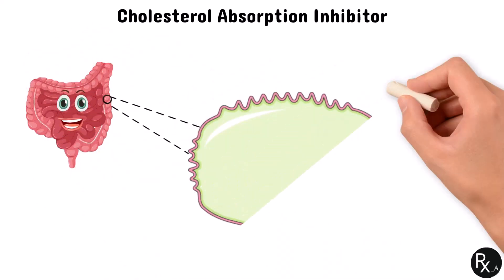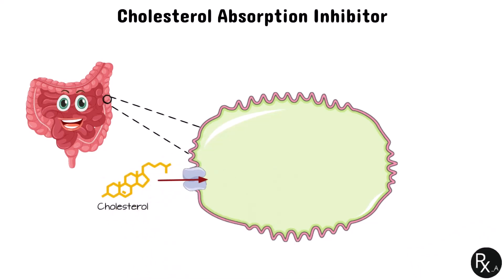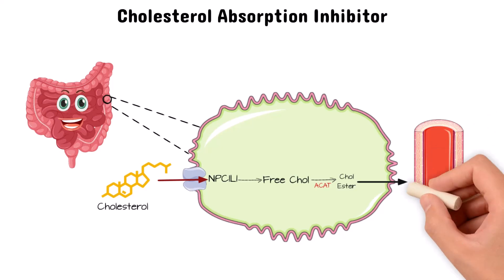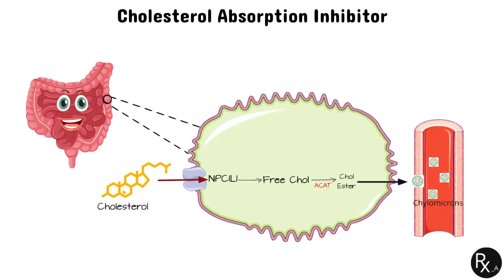Let's now discuss cholesterol absorption inhibitors, another class of medications that lower cholesterol. Free cholesterol coming from food or bile sources first attaches to the protein NPC1-L1, which is found in the plasma membrane of enterocytes — the cells that line the walls of the intestines. Following binding, endocytosis is triggered. During endocytosis, the cholesterol cargo is internalized by the protein complex clathrin/AP2, which functions on the cell membrane. When endocytosis occurs, the cholesterol is released and NPC1-L1 returns to the plasma membrane. To prevent NPC1-L1 from interacting with the clathrin-AP2 complex, which is required for endocytosis, the cholesterol absorption inhibitor simply binds to NPC1-L1.